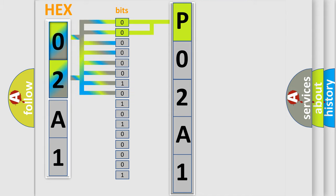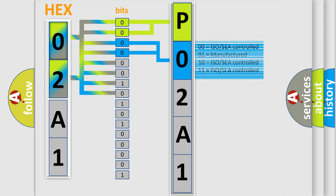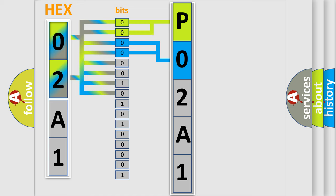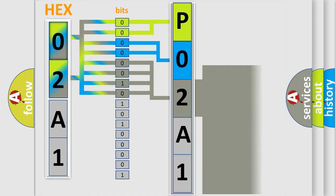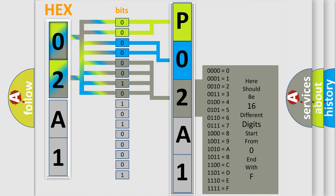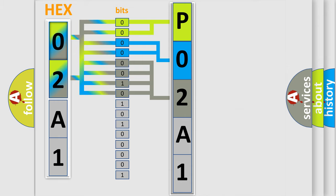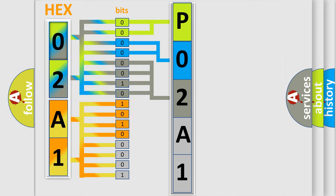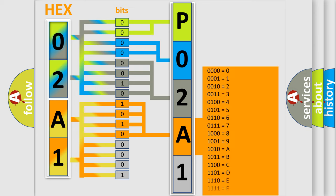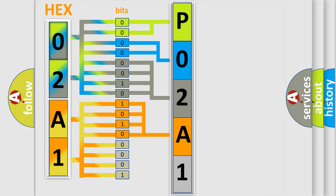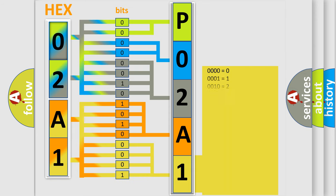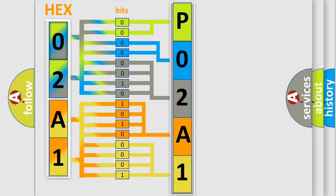The next two bits determine the second character. The last bits of the first byte define the third character of the code. The second byte is composed of a combination of eight bits. The first four bits determine the fourth character of the code, and the combination of the last four bits defines the fifth character. A single byte conceals 256 possible combinations. We now know how the diagnostic tool translates the received information into a more comprehensible format.